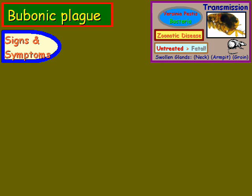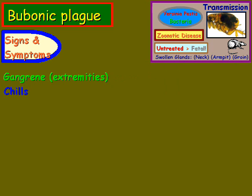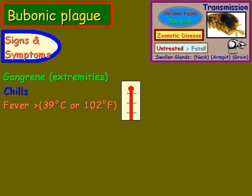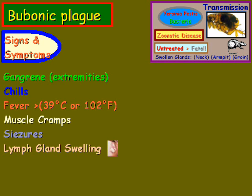The signs and symptoms of bubonic plague are gangrene on extremities such as fingers, toes, arms, and legs, chills, fevers greater than 102 degrees Fahrenheit, muscle cramps, seizures, lymph gland swelling as we mentioned earlier, skin color changes, and vomiting blood.